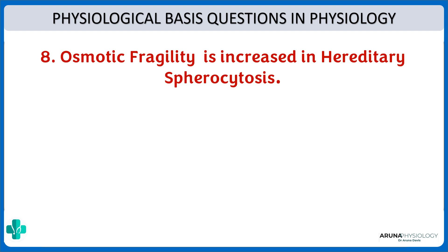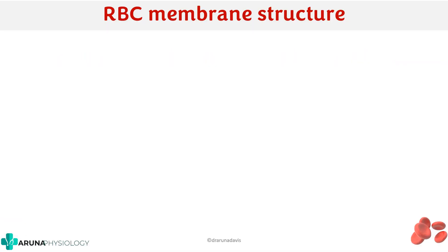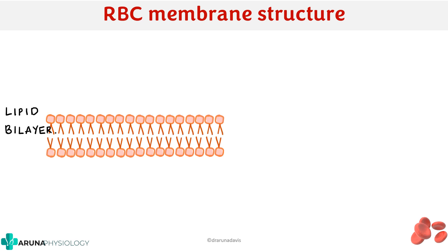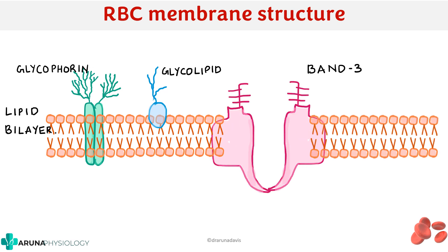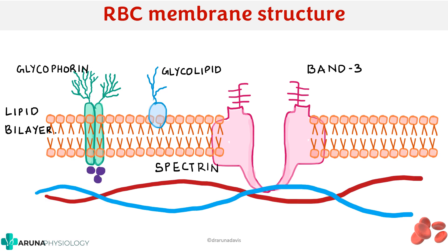The eighth question: why is osmotic fragility increased in hereditary spherocytosis? To understand this, we need to know the defect involved. In hereditary spherocytosis the RBC membrane structure is affected. The RBC membrane consists of a lipid bilayer with integral proteins such as glycophorins, glycolipids, the transmembrane protein band 3, and membrane skeletal proteins — especially spectrin and ankyrin. Spectrin is attached to glycophorin via actin, and ankyrin binds it to band 3.